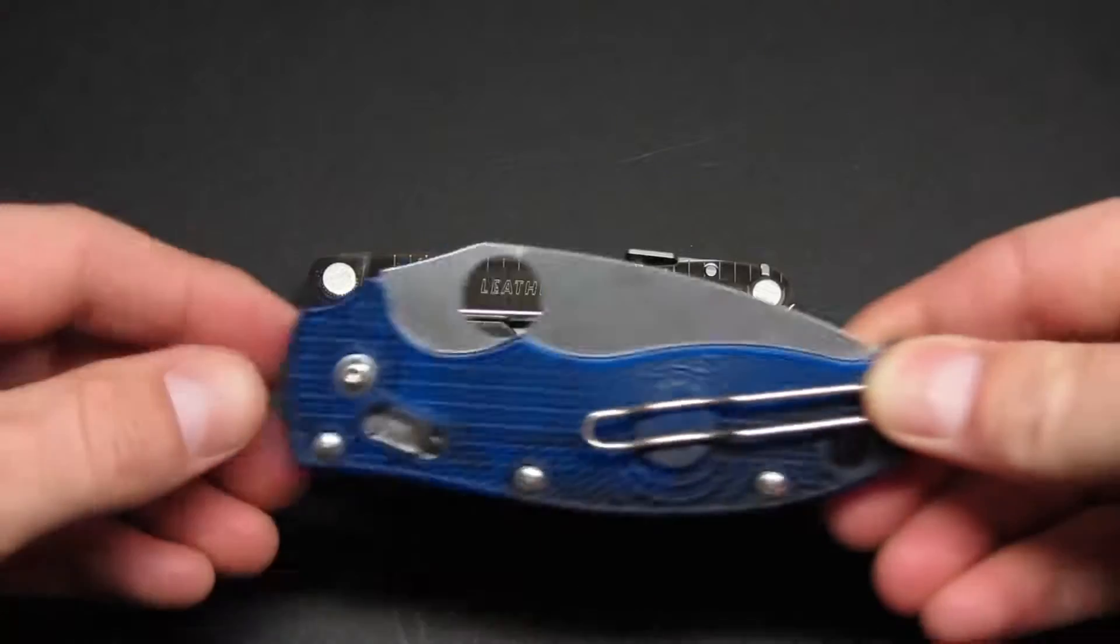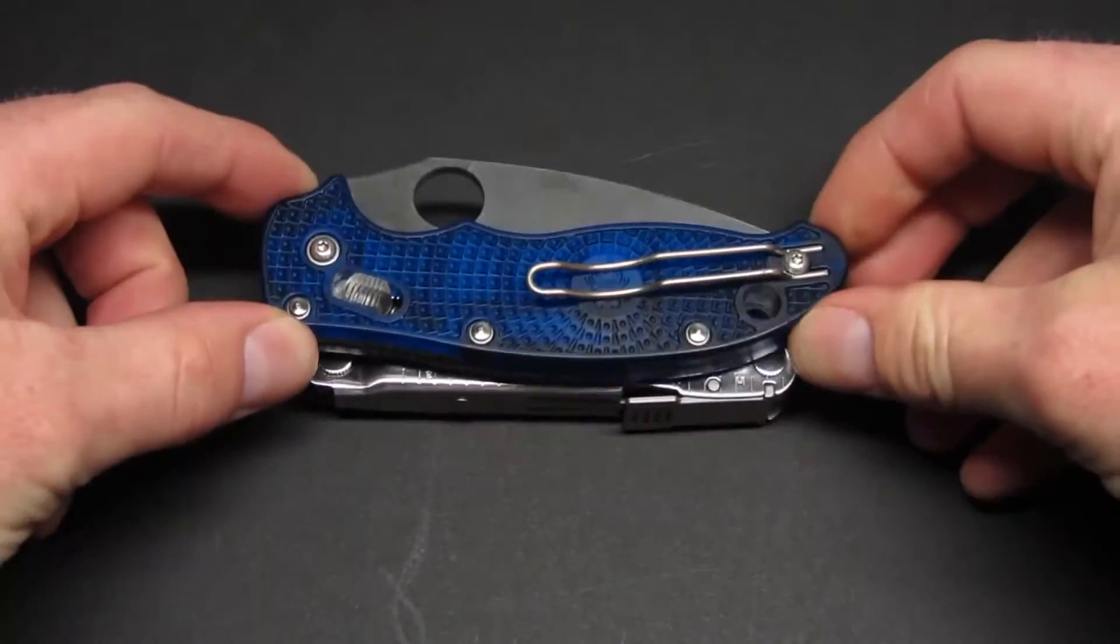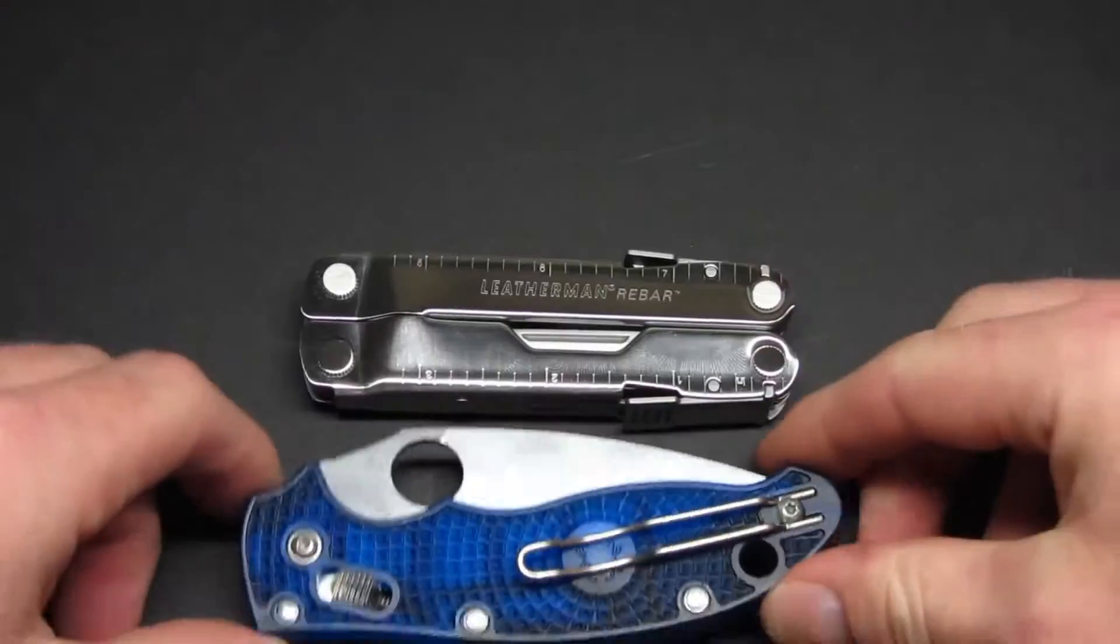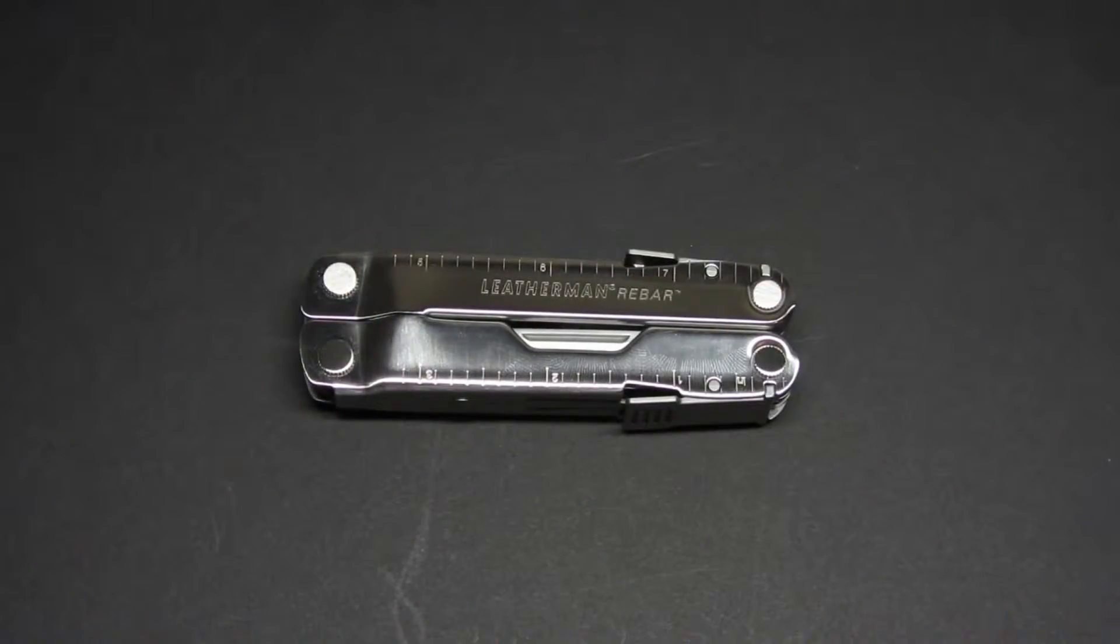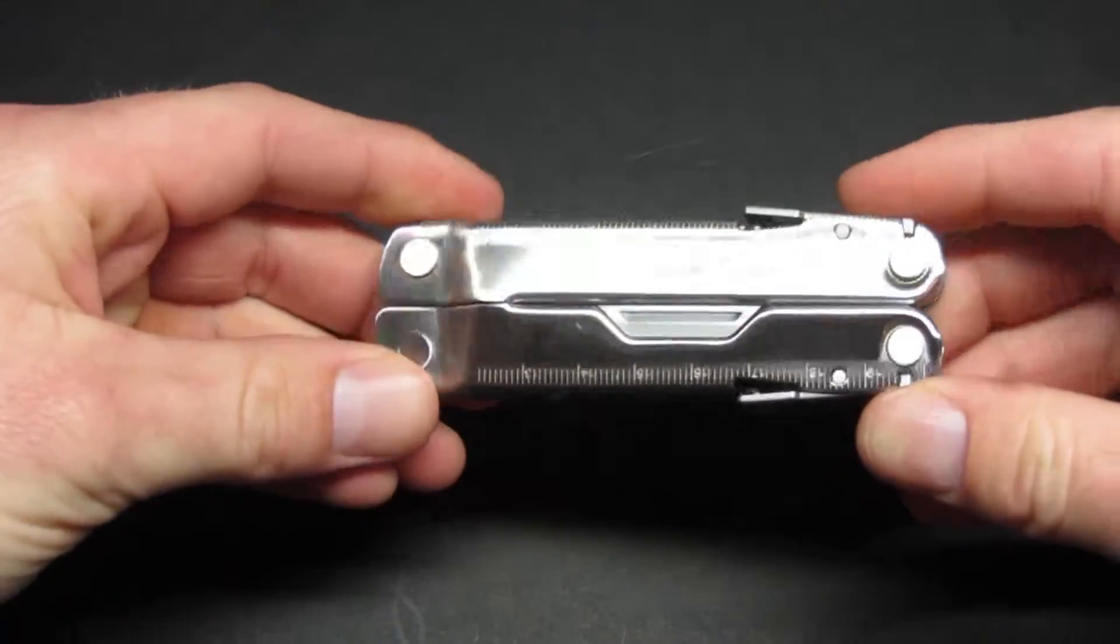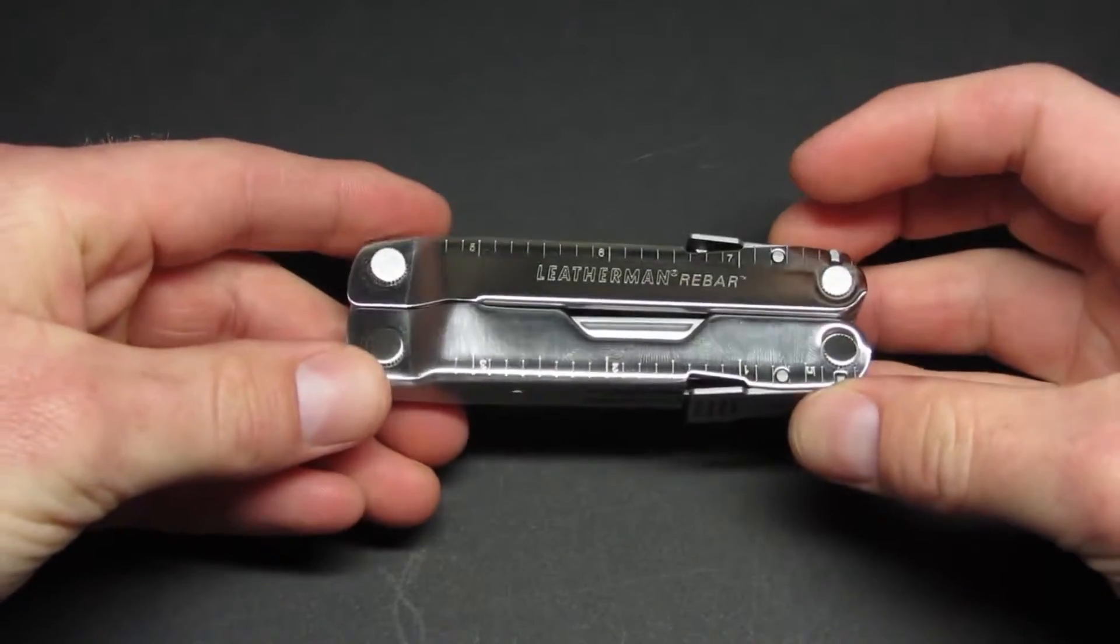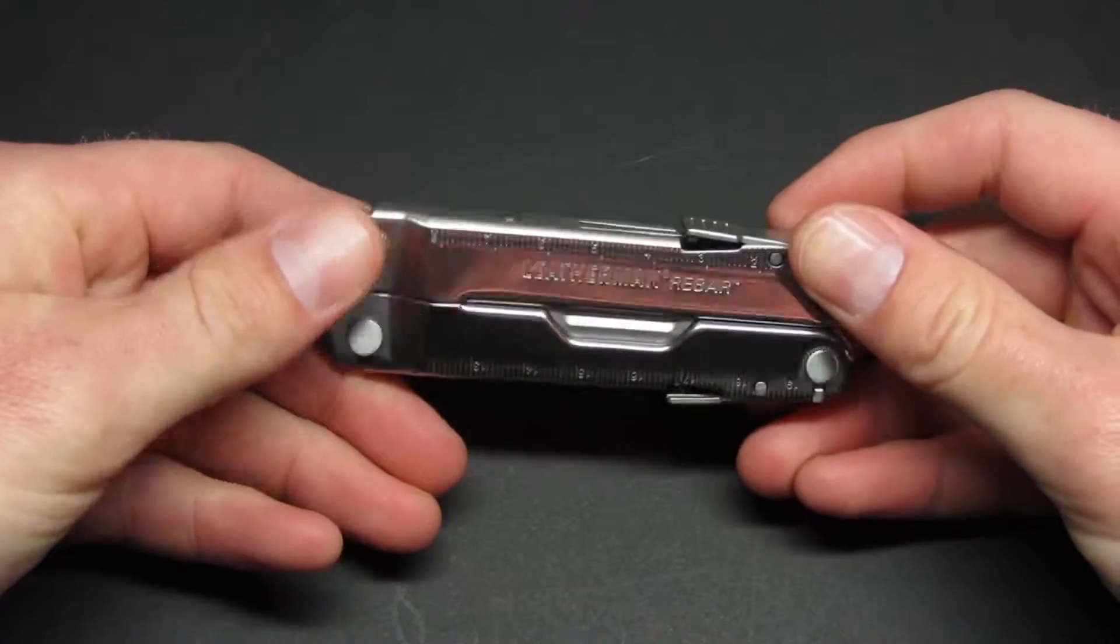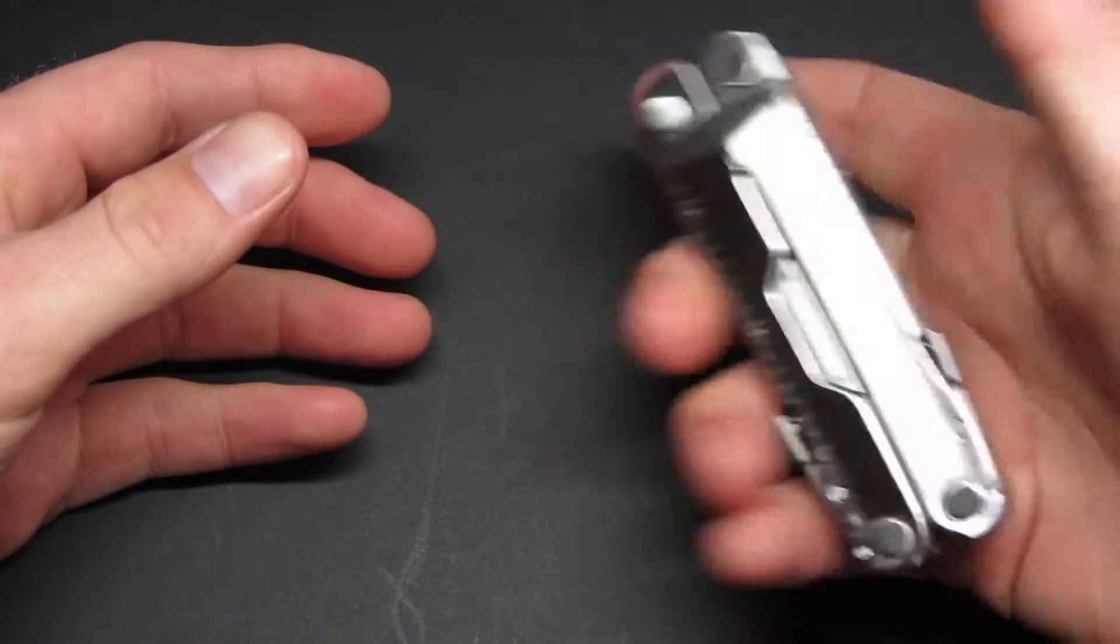Here's a Spyderco Manix 2 Translucent Blue. You can see that the multi-tool is smaller when it's all folded up than this knife, so it gives you an idea for size reference. As far as the design, it's really a no-frills kind of multi-tool. It's really simple, kind of an old style. It has the old Leatherman look to it, a great classic look.